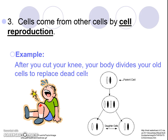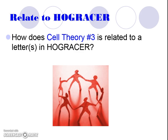Last but not least, remember how Virchow said all cells come from pre-existing cells? Here's an easy way of saying that: cells come from other cells because of cell reproduction. After you cut your knee, your body divides your own cells to replace those dead ones — thank goodness, otherwise you'd bleed out. And for a bacteria, that's how they make their babies. So what letter of HOGSRACE does this sound like? Probably 'reproduce,' but some people argue 'growth' too, because it helps us grow skin back — either of those two make sense. We have to know these three parts of the cell theory; it's the basics of what we're going to be learning in the cells unit. Soon we're going to be learning about different types of cells and different things that are in those cells, so make sure you know these basics really, really well. Good job, guys.